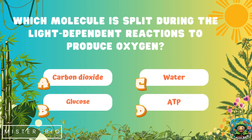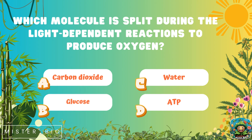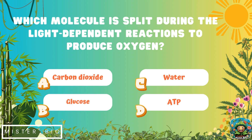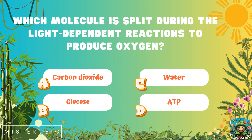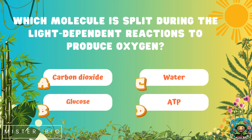Which molecule is split during the light-dependent reactions to produce oxygen? A) carbon dioxide, B) glucose, C) water, or D) ATP.